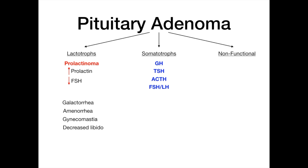Non-functional pituitary adenomas don't produce hormones, so symptoms are consistent with mass effect: headache and bitemporal hemianopia. The bitemporal hemianopia results from compression of the optic chiasm. Because of the pituitary's location, the adenoma tends to compress the optic chiasm. If a vignette describes bitemporal hemianopia, it's probably hinting at a pituitary adenoma. Headache also occurs because of the tumor's growing mass pushing on the brain.